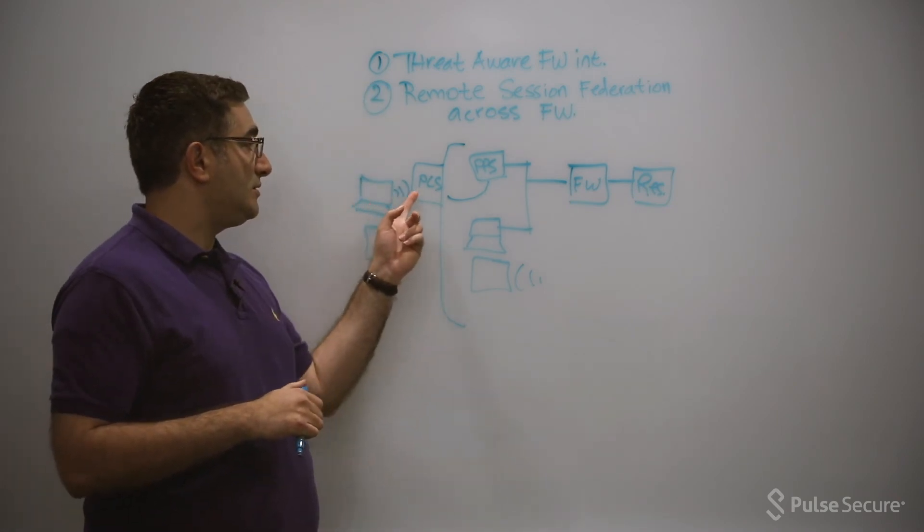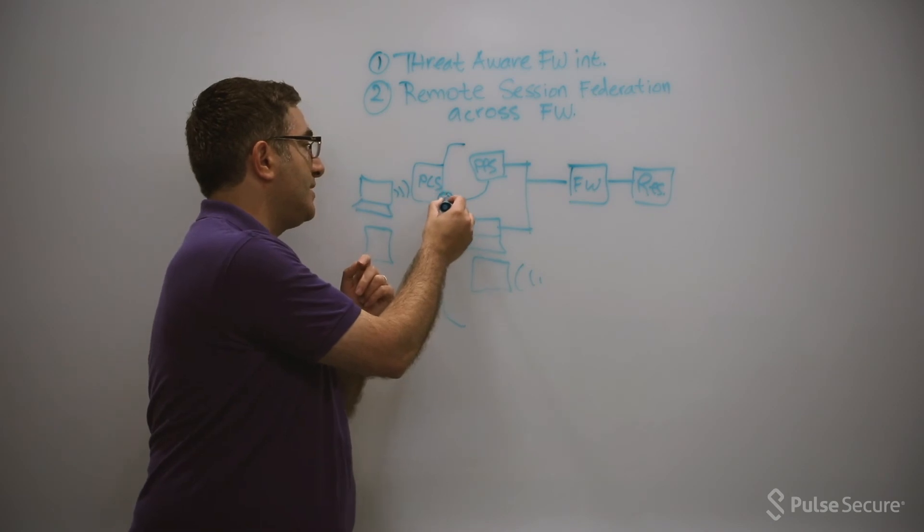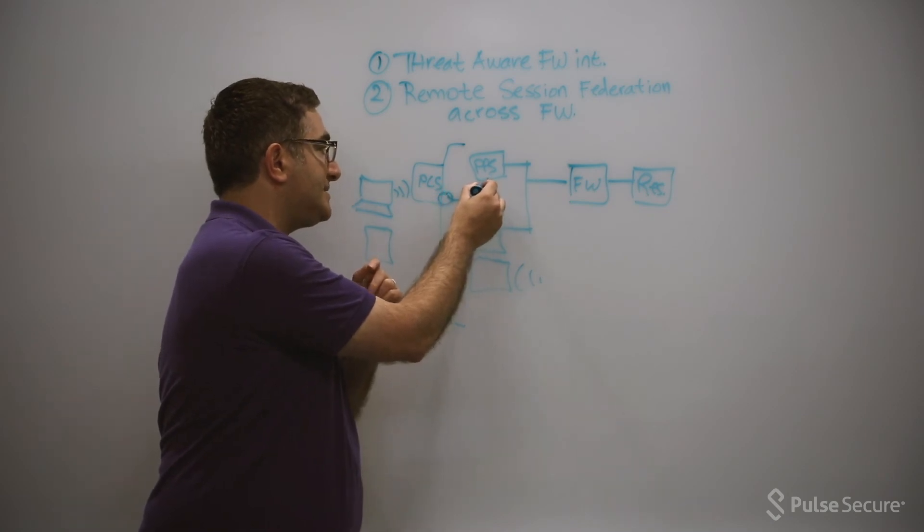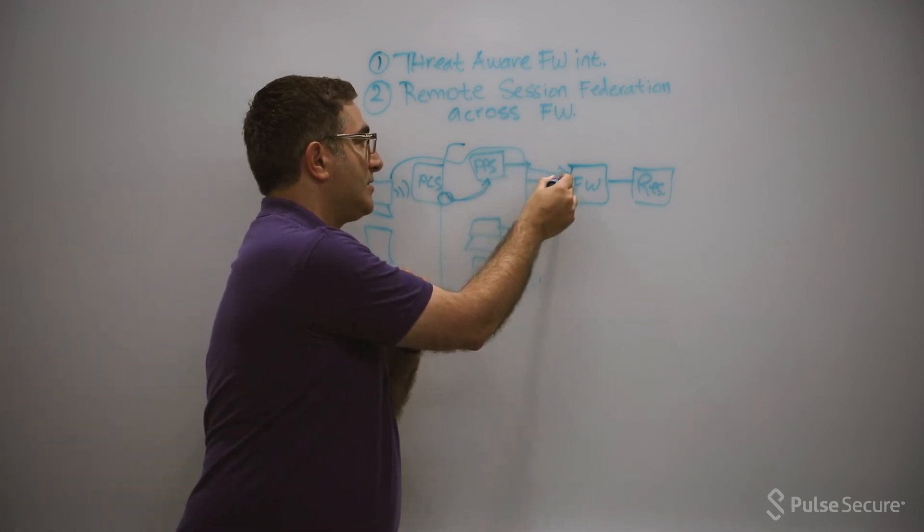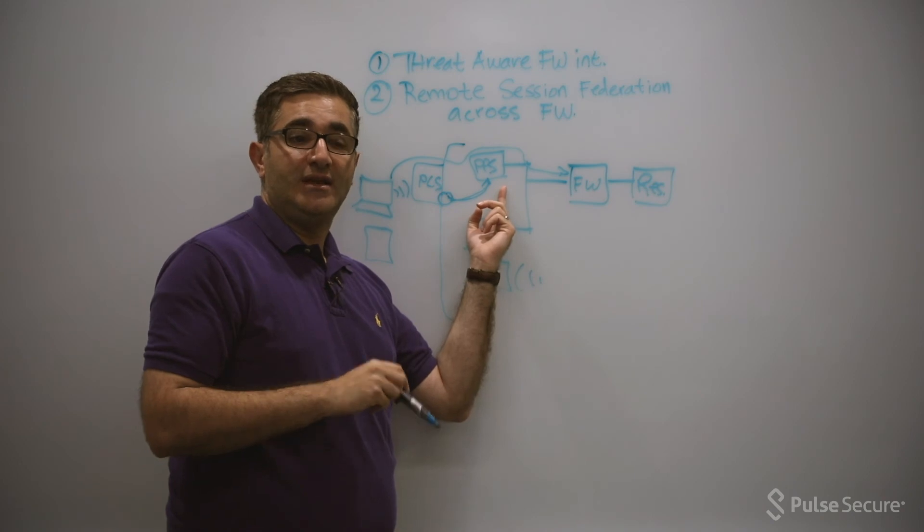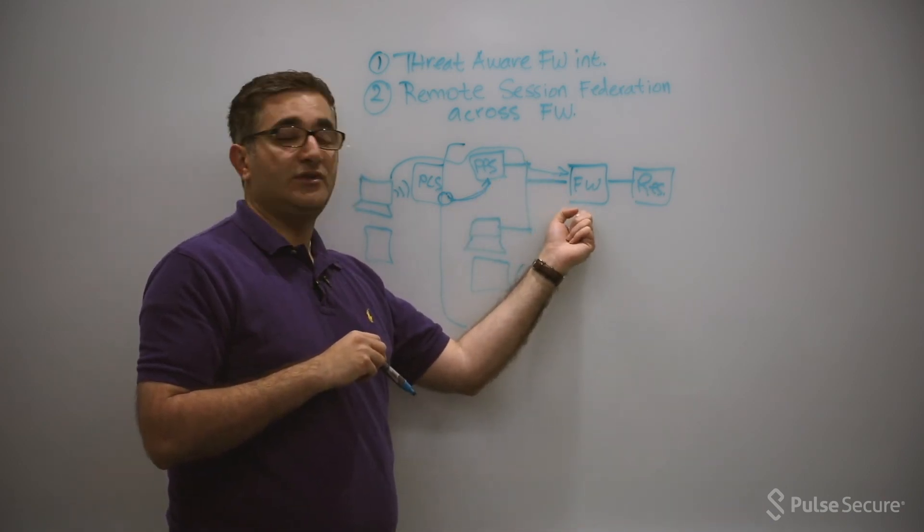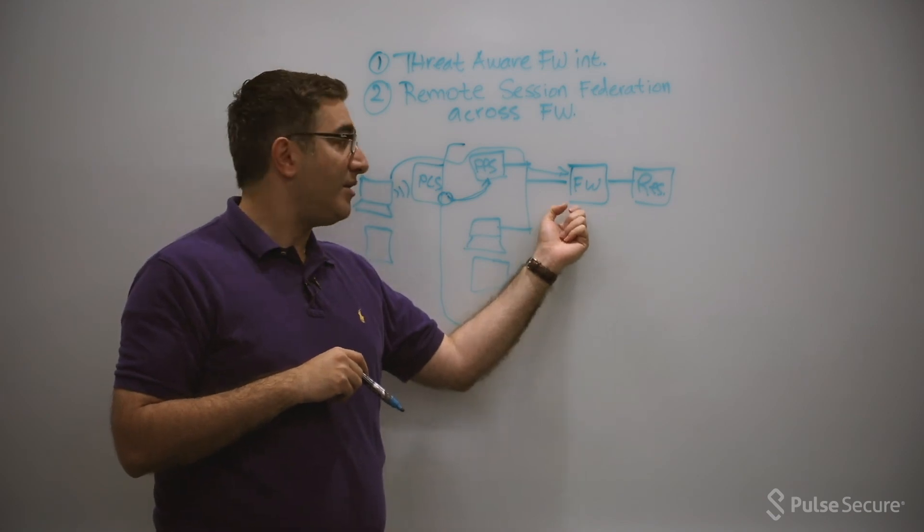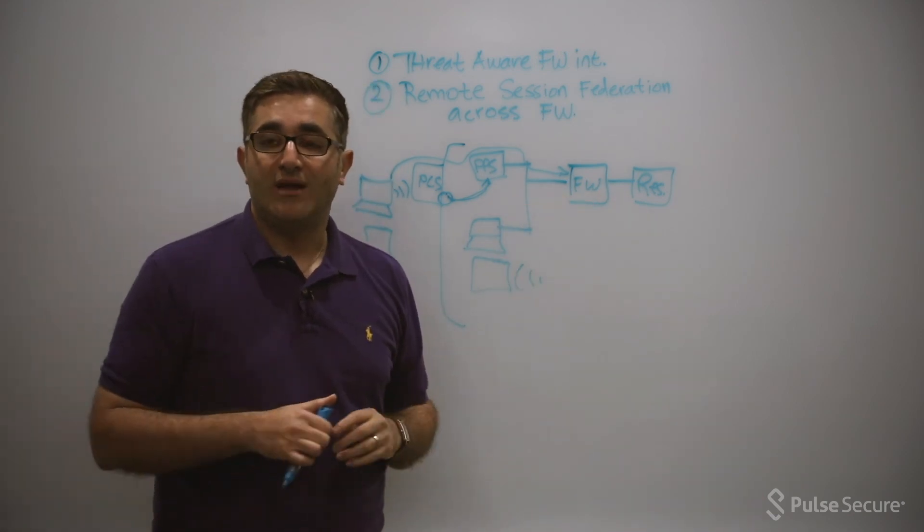So now, as soon as the user logs into PCS, there's going to be a session here. This session gets sent to PPS. As soon as this user tries to traverse the network and get through the firewall, the firewall will get that same session that was federated, pass it back here. Now there's an entry for this user on the auth table of the firewall, and the user can access the resources. They don't really have to do anything extra.